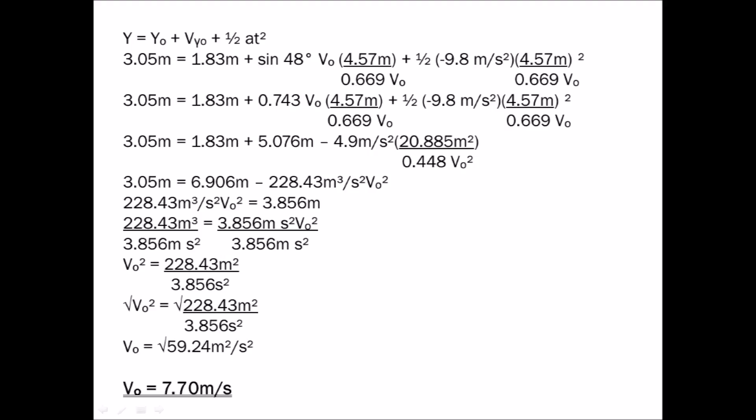One half of negative 9.8 meters per second squared is negative 4.9 meters per second squared. Multiplied by the square of (4.57 divided by 0.669 v₀), which is 20.885 meters squared divided by 0.448 v₀², gives us negative 4.9 times 20.885 divided by 0.448, equaling negative 228.43 meters cubed over s² v₀².